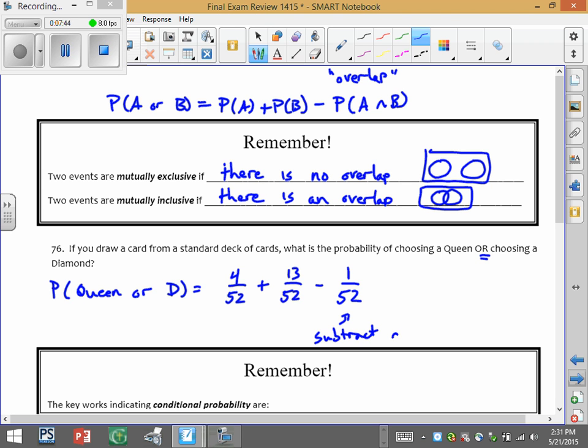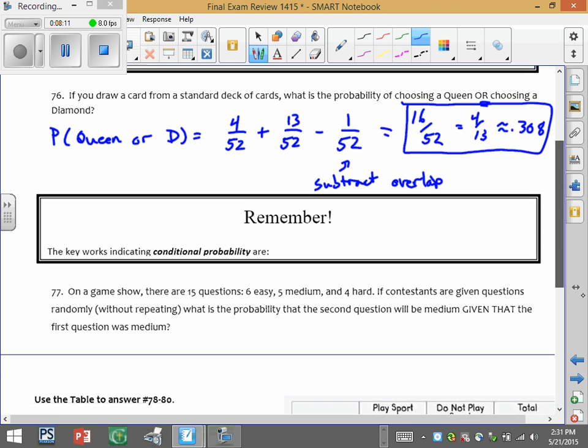Sometimes you won't have overlaps, but you should always consider, is there one that could potentially be there? So that'll end up being 16 out of 52. As a decimal, it's about 0.308. If you wanted to simplify the fraction, it's 4 over 13. All three of these answers would be acceptable. This depends upon what you would like to do.